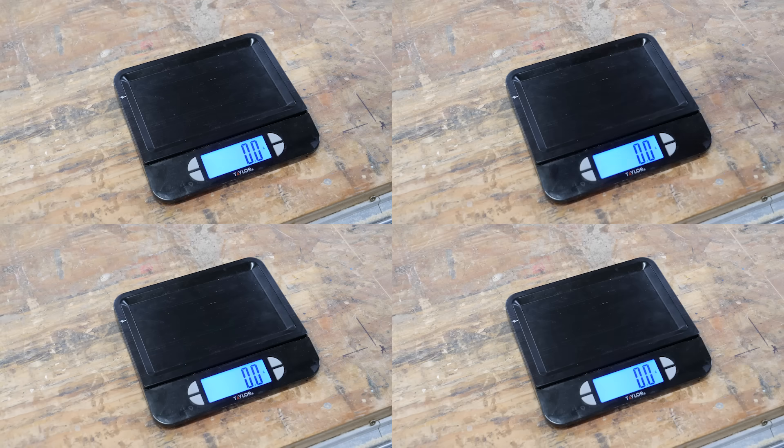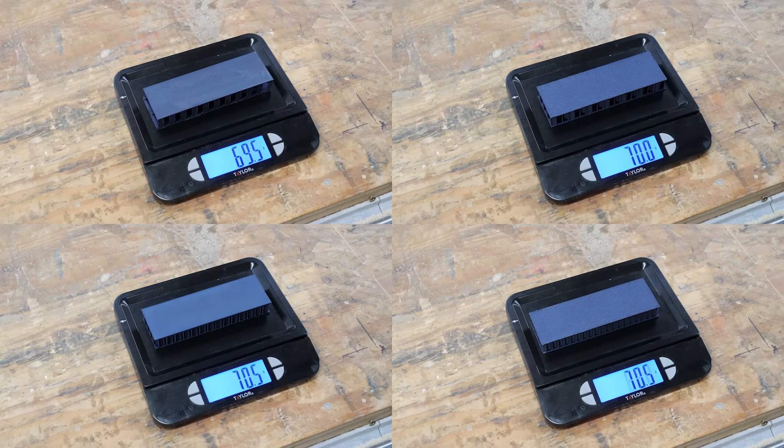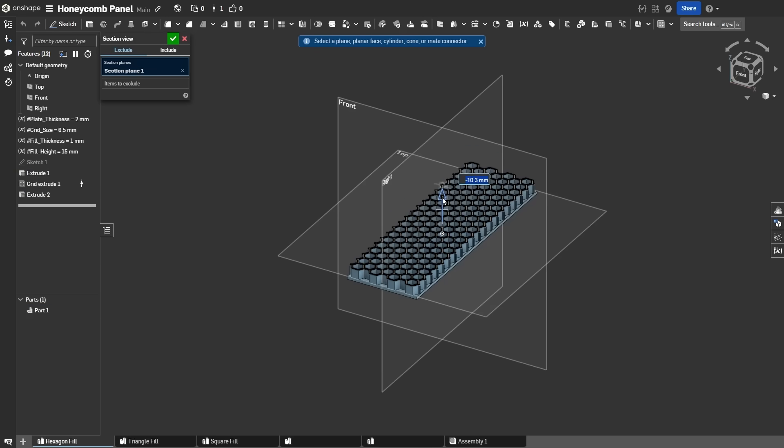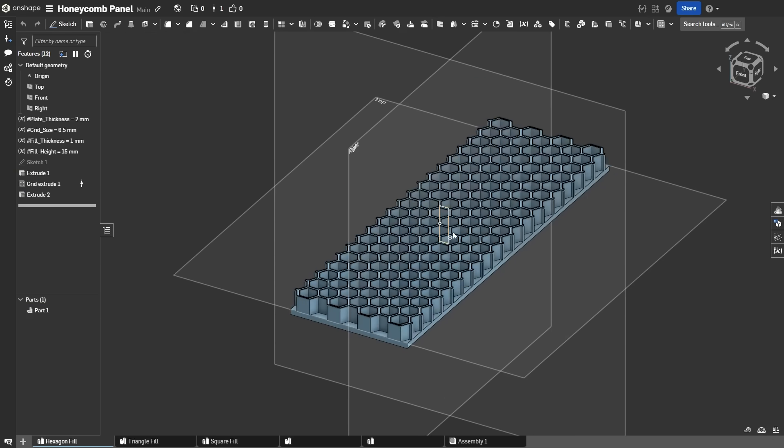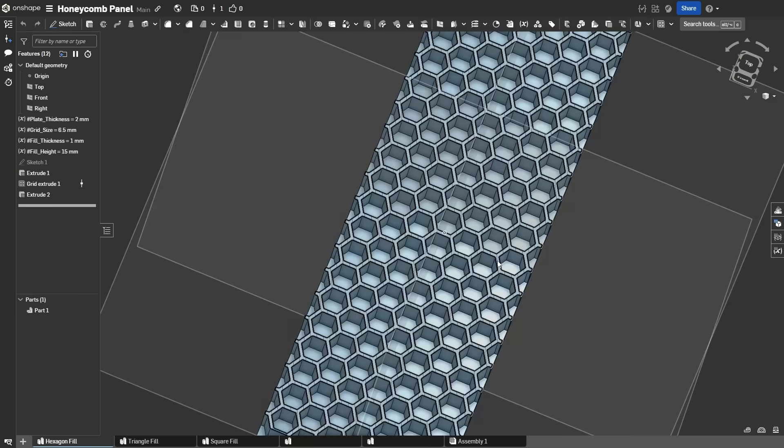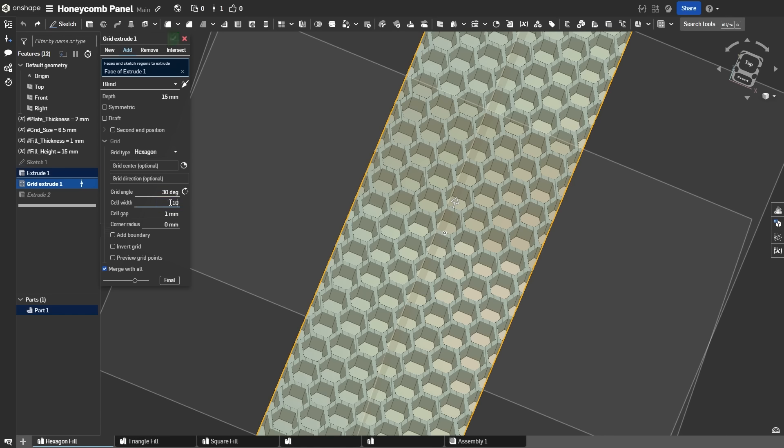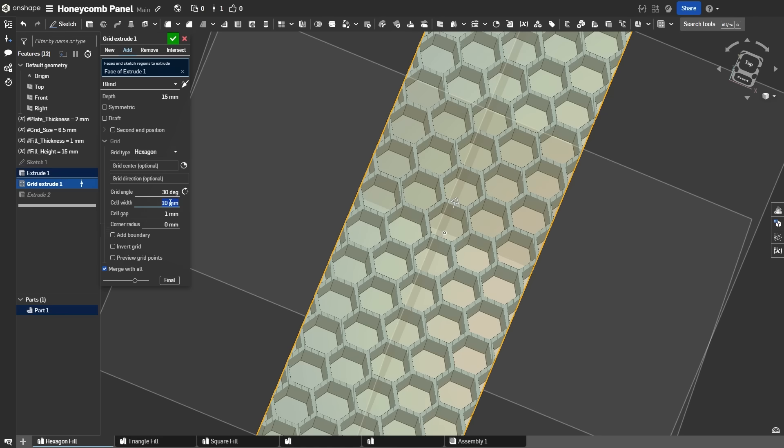After a couple of failed prints, I finally got a complete set of panels, which all used almost exactly 70 grams of filament. This time, because the walls of the infill are exactly two layers thick, I had to adjust the density by scaling the shapes rather than thickening them. I found an add-in for Onshape called Grid Extrude, which made this super easy to model.